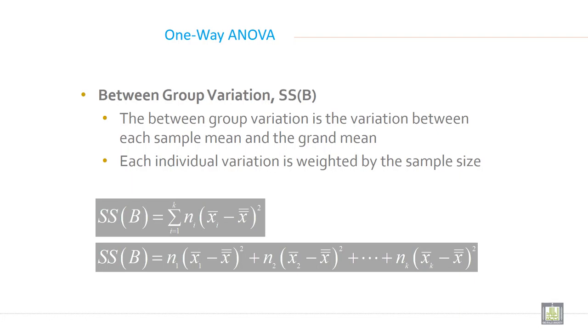Now between group variation, SSB, how it will come and how you can calculate? The between group variation is the variation between each sample mean and the grand mean. Each individual variation is weighted by the sample size.